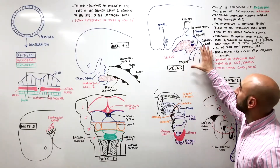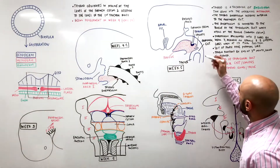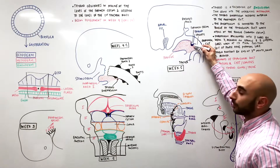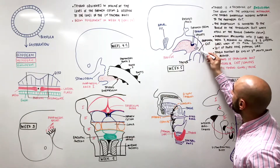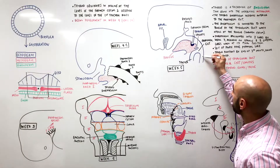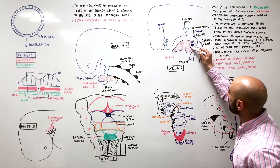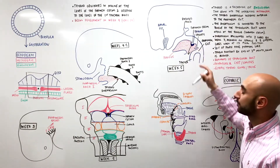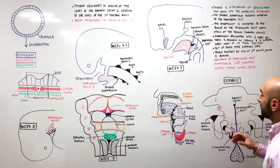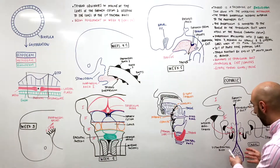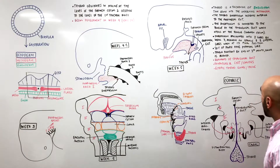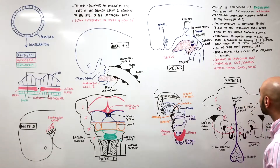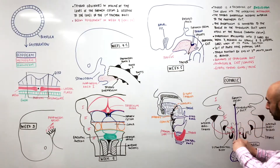The thyroid grows and moves in front of the pharyngeal gut. Looking at this week-5 section of the embryo, at the foramen cecum the thyroid grows from endoderm, penetrates the mesoderm — with the pharyngeal gut on one side, the trachea on another, and the future esophagus behind — and it moves in front of the pharyngeal gut and epiglottis. By the end of the third month, the thyroid is functioning, producing colloid, and you can even see some thyroxine being produced.